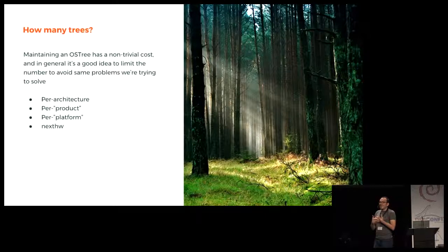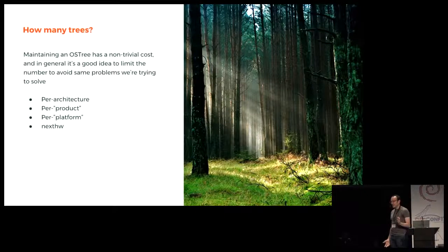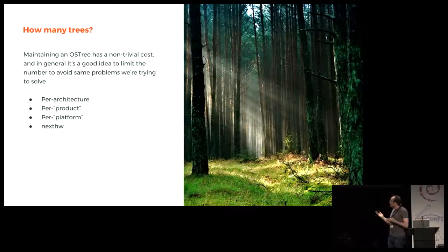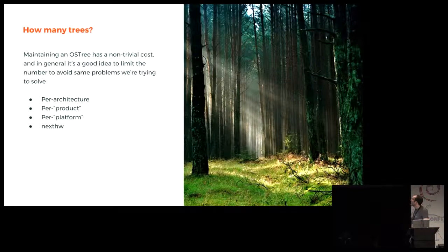Making these trees has a cost — especially maintaining them. One could be inclined to make a hundred different versions of OSTree. Making an OSTree is not exactly like maintaining a distro, but it's similar because you end up facing the same problems: too many configurations to test, combinatorial explosions and so on. We have intentionally limited ourselves to just making OSTs when needed — per architecture, per product, per platform. 'Next hardware' is an OSTree we make especially for people with bleeding-edge hardware — just a different kernel — and people can opt into it if regular Endless doesn't work.